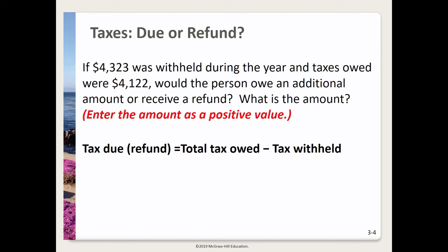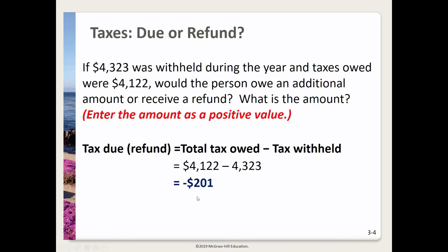In this next problem, we're looking again at taxes — are they due or are we getting a refund? If $4,323 was withheld during the year and taxes owed were $4,122, would the person owe an additional amount or receive a refund? We take the total tax owed and subtract what was withheld: $4,122 minus $4,323, giving us negative $201.